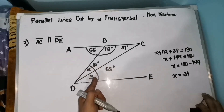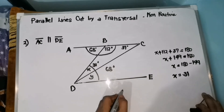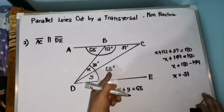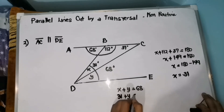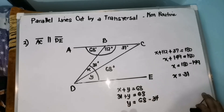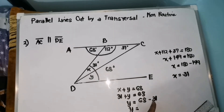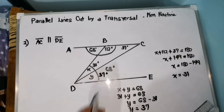Paano natin makukuha yung measurement ni Y? Kailangan, kapag pinag-add yung X and Y, dapat siya ay 68 degrees — that is X plus Y equals 68 degrees. Nalaman natin ito kasi ka-alternate interior angles nitong 68 degrees. So, 31 plus Y equals 68. Then Y equals 68 minus 31, which is 37 degrees. Therefore, the measurement of angle Y is 37 degrees.